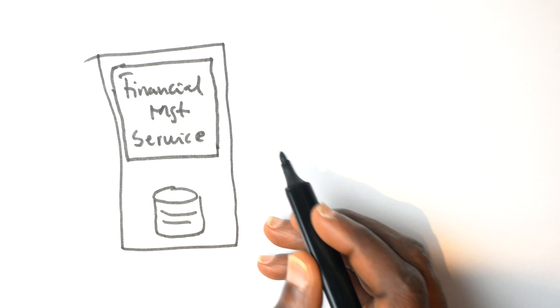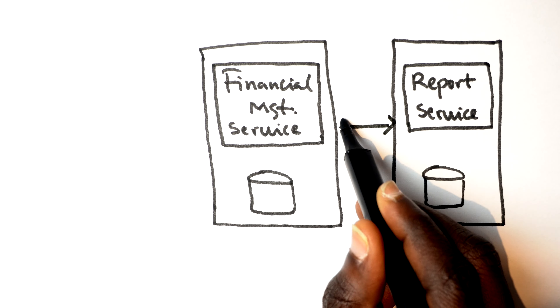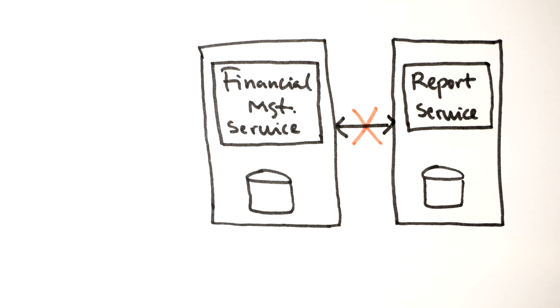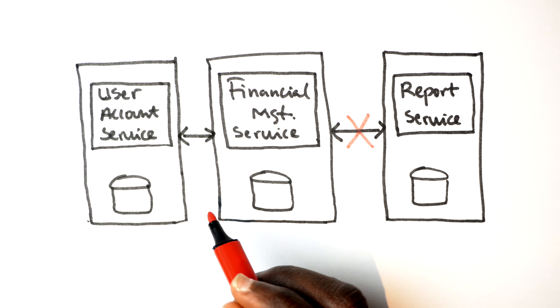The first thing we can do is pull the report generation aspect out of the financial management service into a different, independent microservice. When we do that, we want to avoid having tightly coupled communication between the report service and the financial management service. We also want to decouple the account service from directly telling the financial management service that a new user has been created. So these two tight couplings need to be removed.